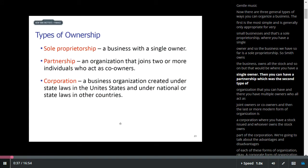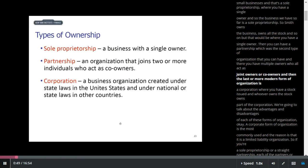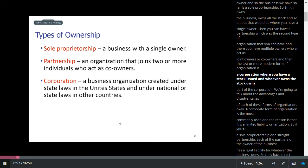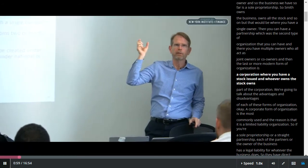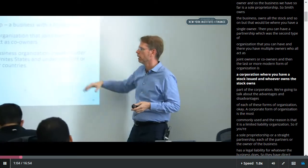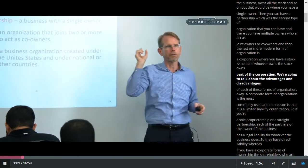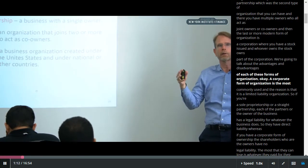Where you have a single owner, and then you can have a partnership, which is the second type of organization. There you have multiple owners who all act as joint owners or co-owners. And then the last, more modern form of organization is a corporation, where you have a stock issue, and whoever owns the stock owns part of the corporation. We're going to talk about the advantages and disadvantages of each of these forms of organization.